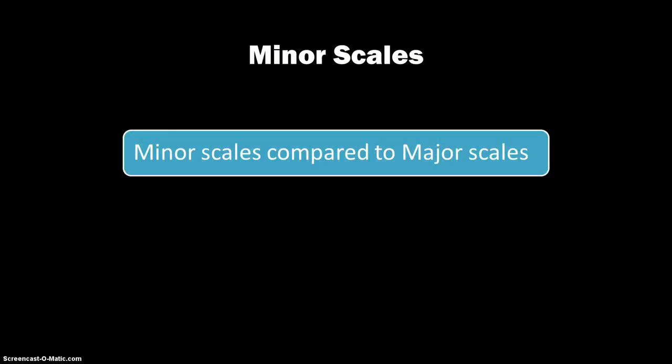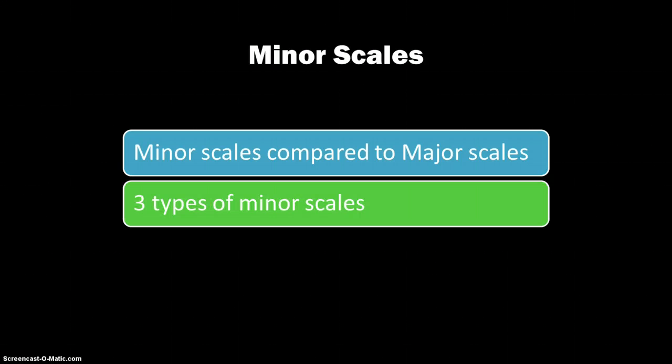This presentation will explain minor scales. To construct minor scales, we're always going to compare them to the major scales because that's something we already should have proficiency in. So if you want to have your circle of fifths page handy, that might be helpful if you're unsure of some of your major key signatures. There are three distinct types of minor scales — the first is the main one, and then I'm going to show you two variations on that.